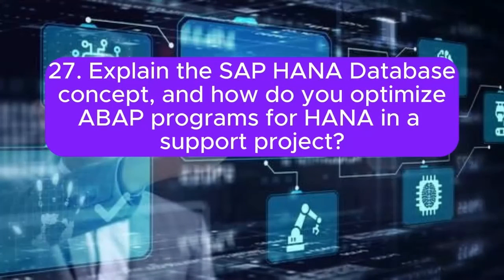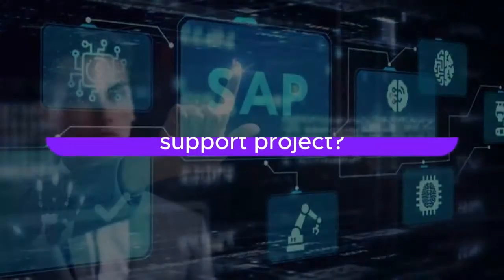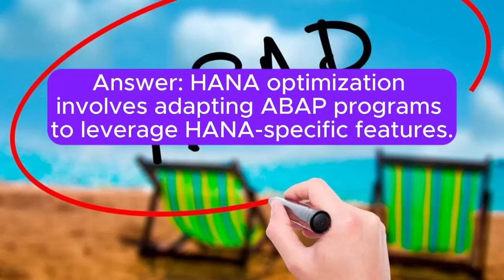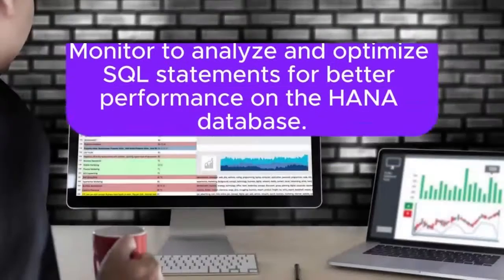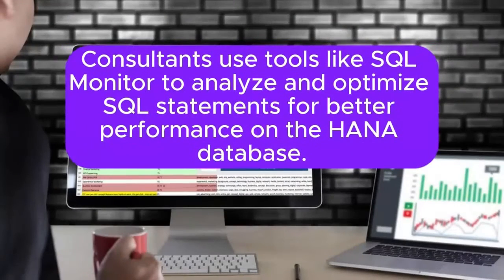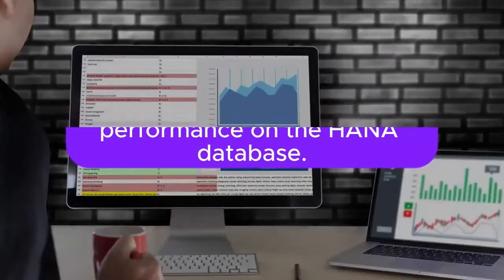Question 27: Explain the SAP HANA database concept, and how do you optimize ABAP programs for HANA in a support project? Answer: HANA optimization involves adapting ABAP programs to leverage HANA-specific features. Consultants use tools like SQL Monitor to analyze and optimize SQL statements for better performance on the HANA database.